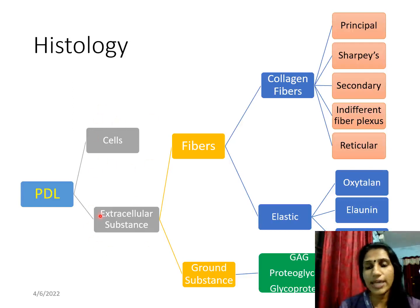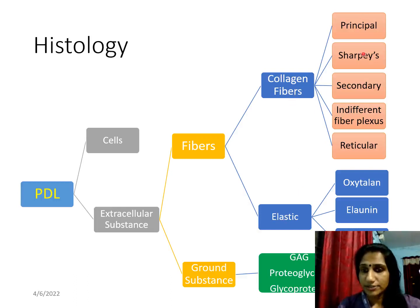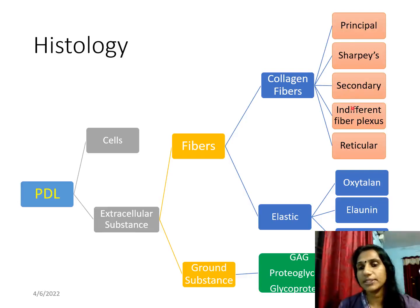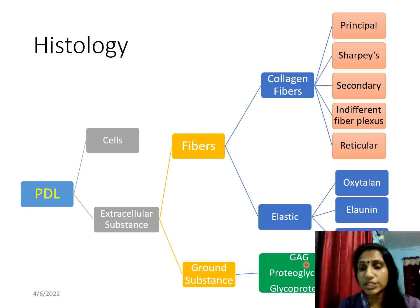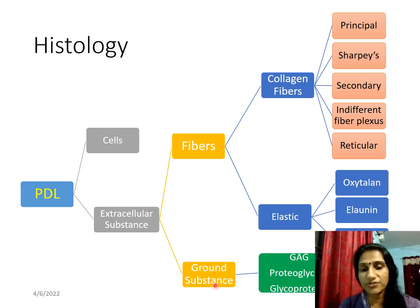When you look at the histology of periodontal ligament, it contains cells and extracellular substance. The extracellular substance is divided into fibers and ground substance. Fibers are mainly two types: collagen fibers and elastic fibers. Principal collagen fibers form the main periodontal ligament; accessory to that are Sharpey's fibers. Secondary fibers and reticular fibers are also present. Elastic fibers are divided into oxytalan, elaunin, and mature elastic fibers. The ground substance contains glycosaminoglycans, proteoglycans, and glycoproteins.